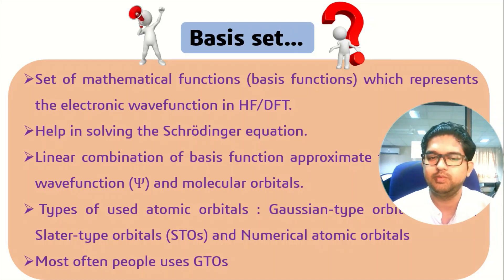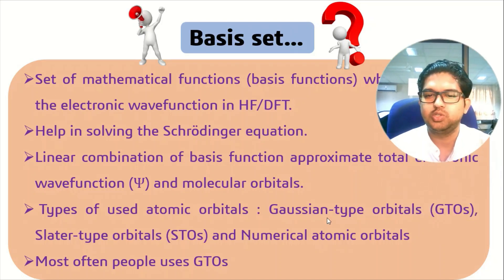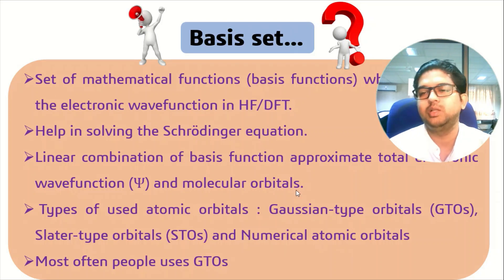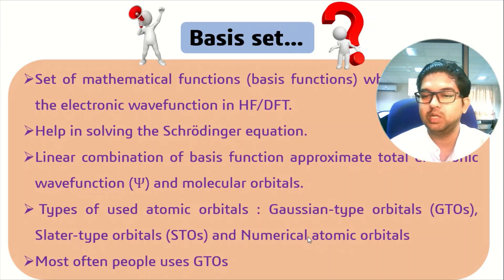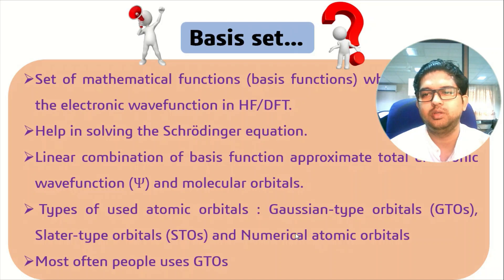This linear combination of basis functions gives you the molecular orbital. We generally use two types of orbitals: the Gaussian type orbital, also known as GTOs, and the Slater type orbital, known as STOs. There is also a numerical atomic orbital. So these are three varieties of atomic orbitals generally used in a basis set.